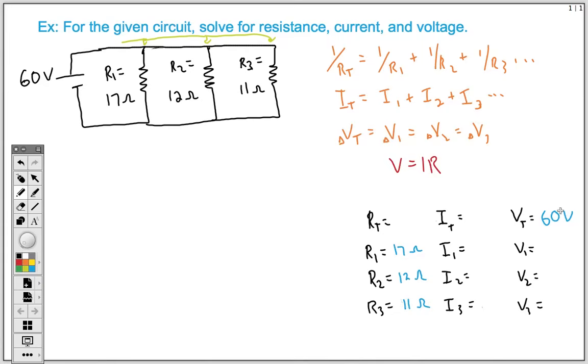So let's start with our voltage here, because that's one of our easier rules. The voltage is the same throughout. So if my total voltage is 60, I know that the rest of my voltages are also going to be 60 volts. So we can fill that in.